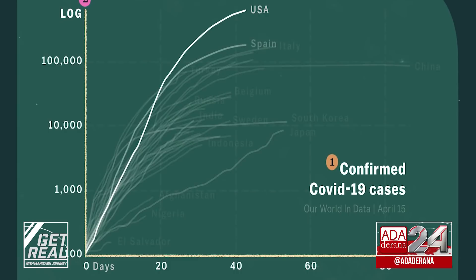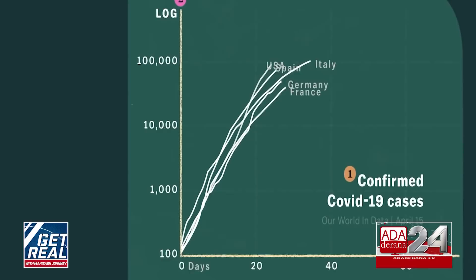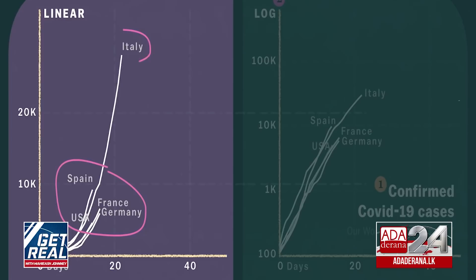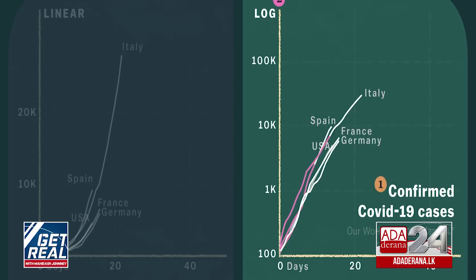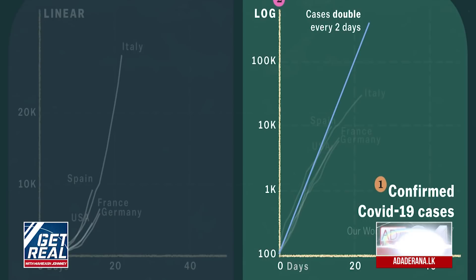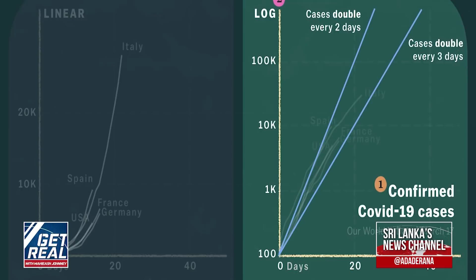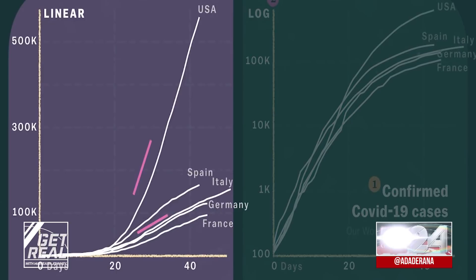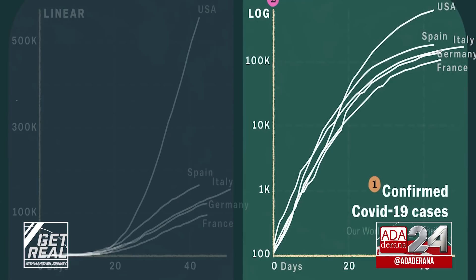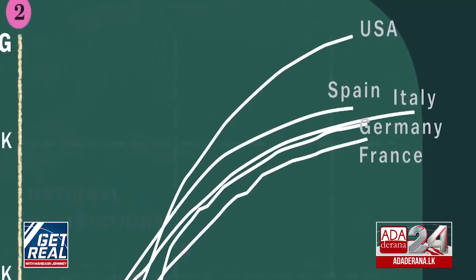So why use a log scale? If you take the five countries with the largest outbreaks and rewind to March 17th, on a linear scale it looked like things were bad only in Italy. But the log scale offered a clearer warning: we were all on the same path of exponential growth. It's the nature of infectious disease that numbers get big fast, so it makes sense for the chart to reflect that. Fast forward a few weeks, and the linear scale shows cases climbing, while the log chart shows curves flattening as governments implemented lockdowns and social distancing.